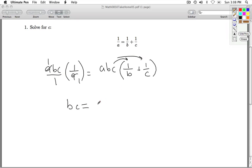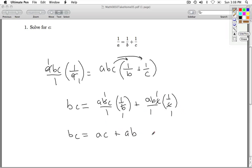On the right hand side I need to use my distributive property. Now I can think of these as fractions: A, B, C over 1. Cancel out the B. I got A times C times 1. That's A, C plus. Cancel this out. I have A times B times 1. That's A, B.